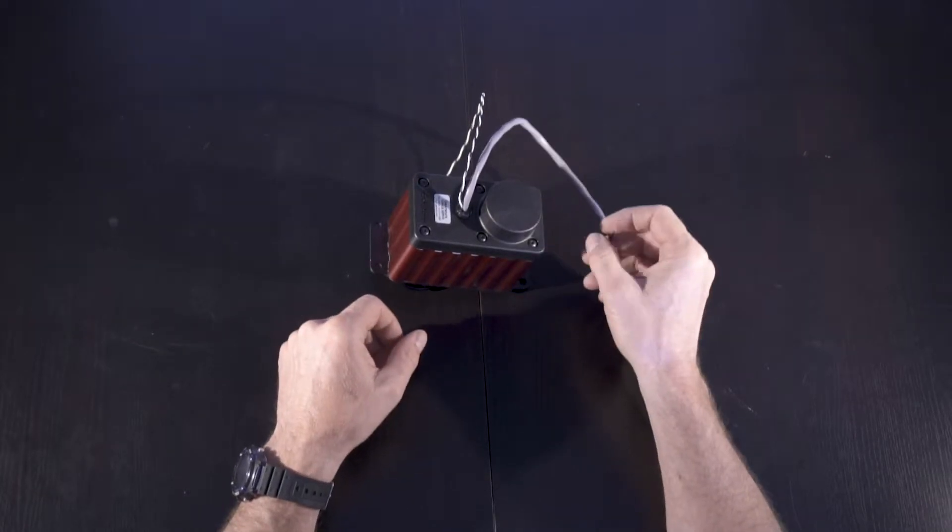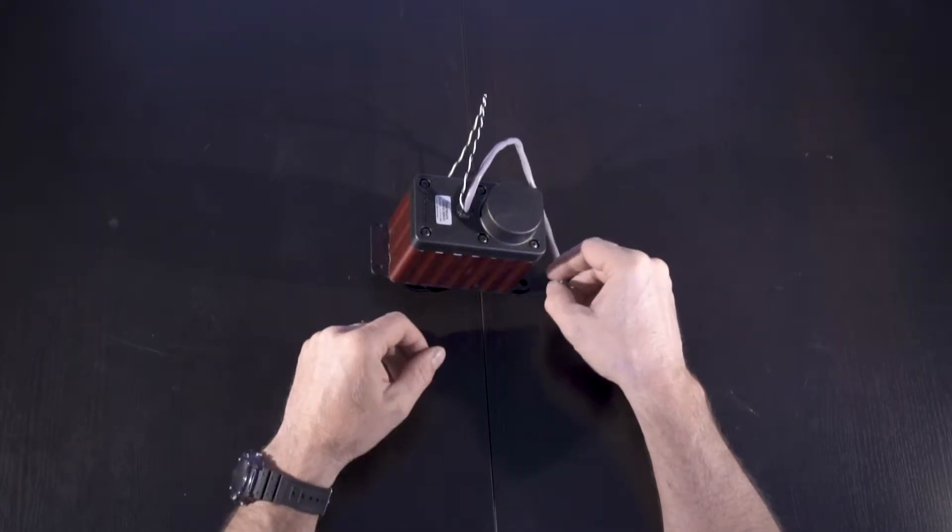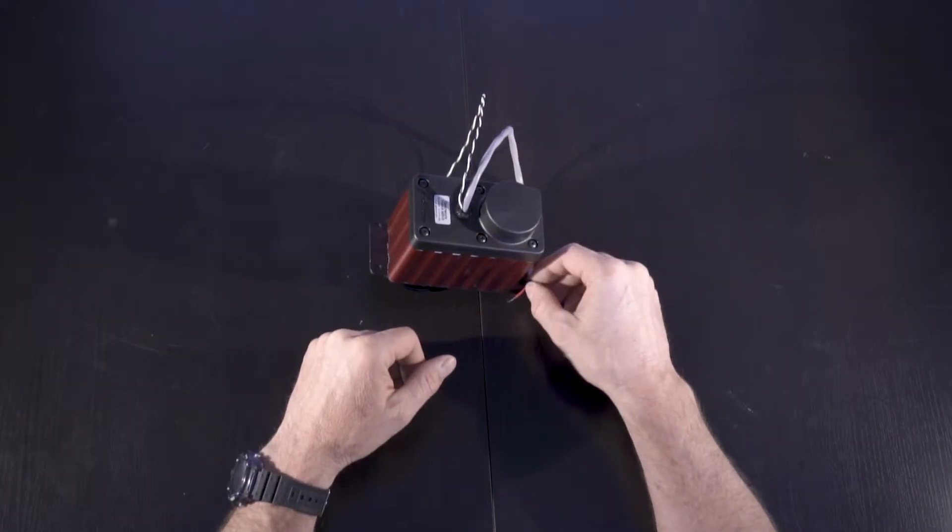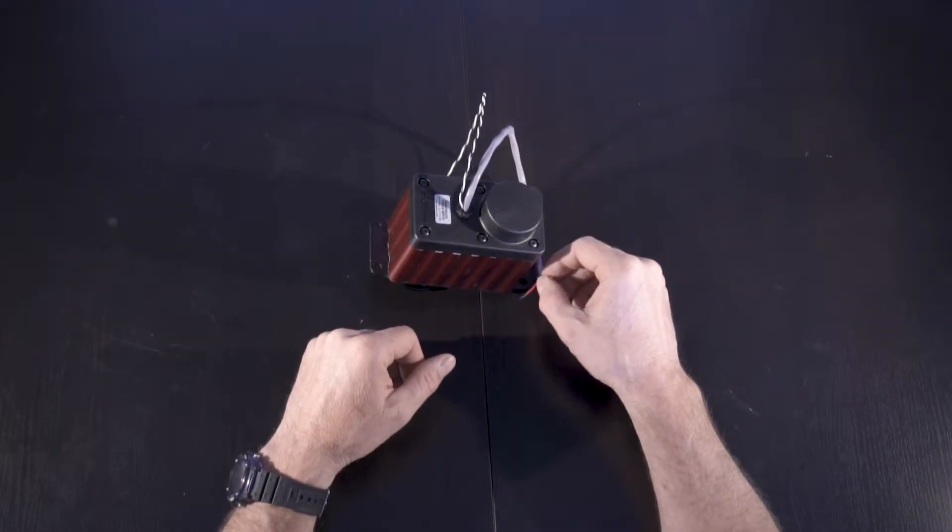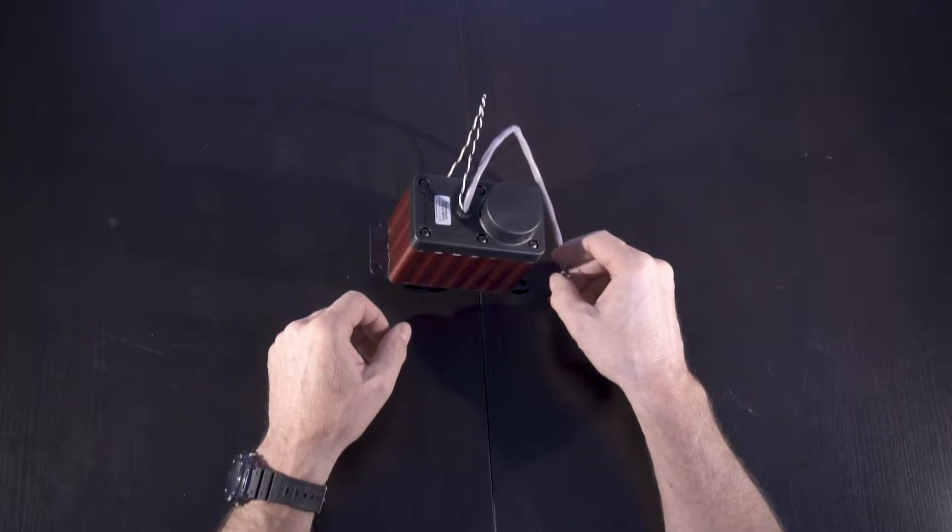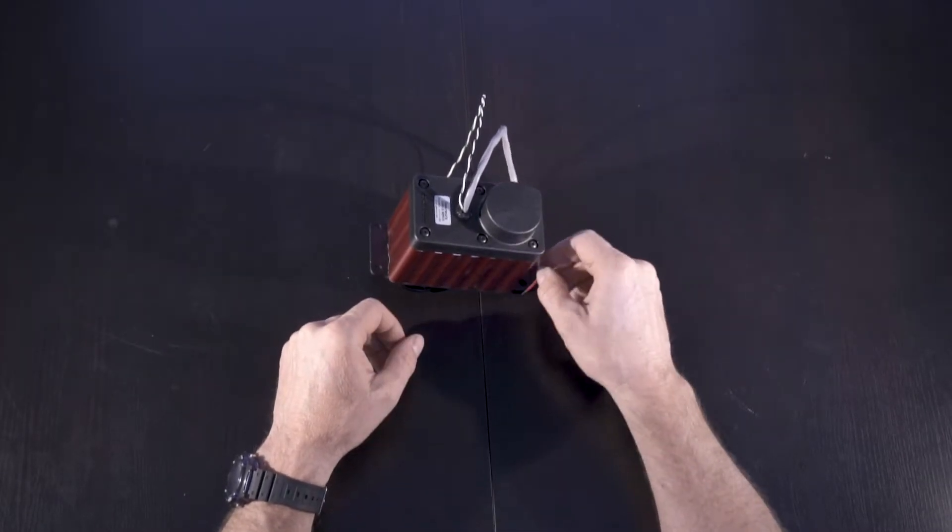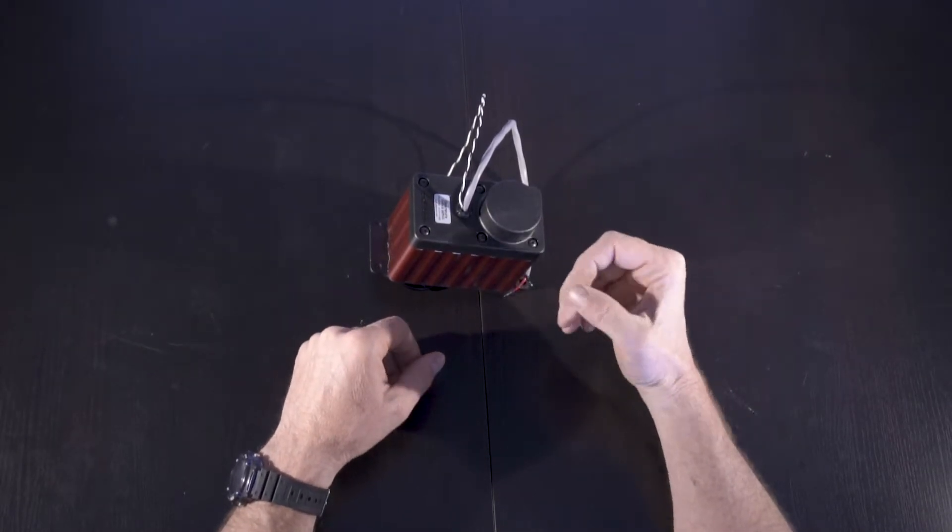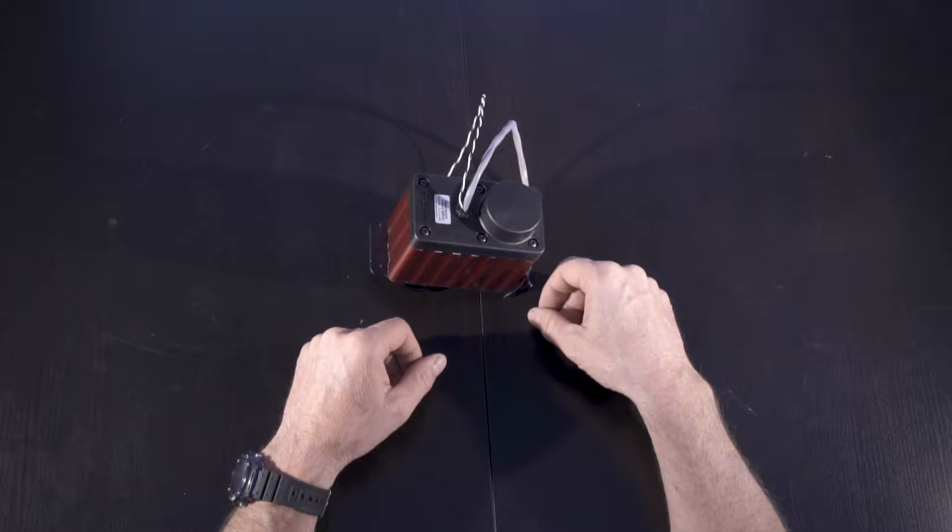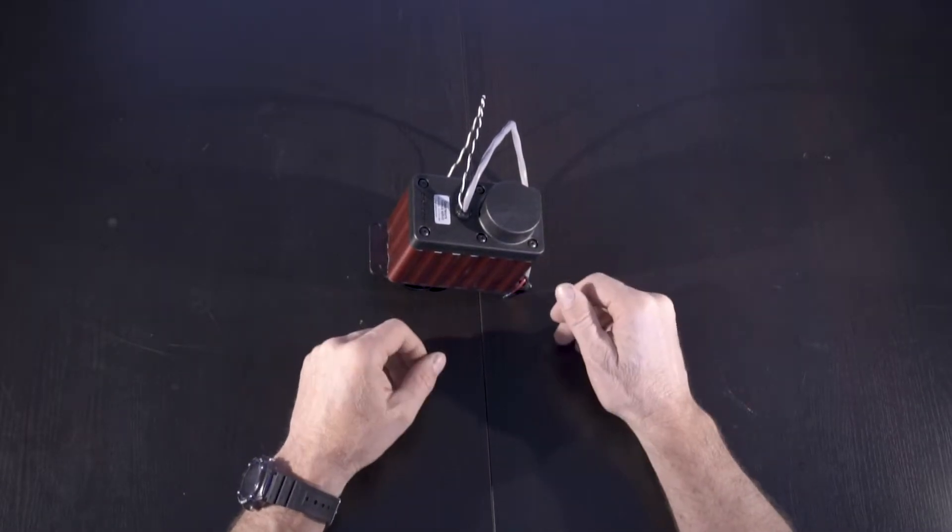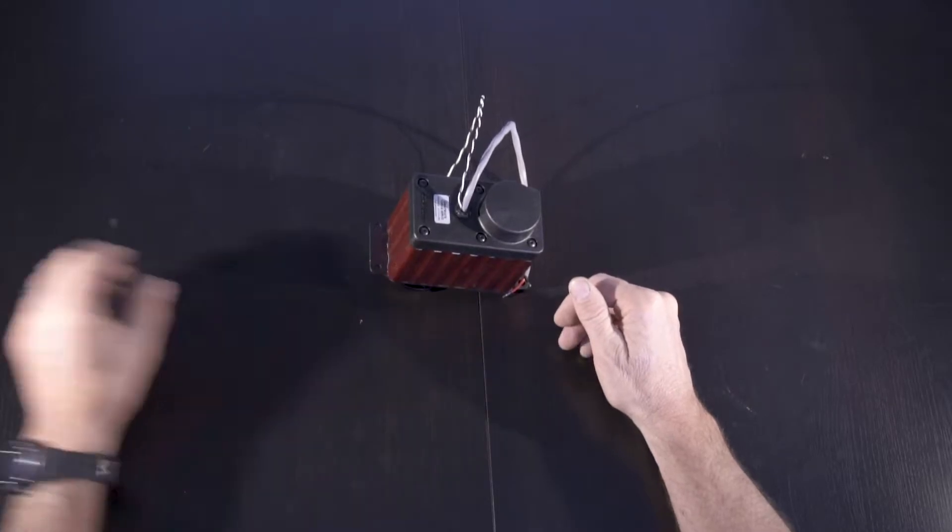But a three or four amp source can handle the servo just fine because the continuous draw is about an amp to an amp and a half, even at full load. So it's a very short duration. Battery does very well with it. A power supply just needs to be able to source that inrush for a brief period. So let's go ahead and power this thing up and see if we can make it spin.